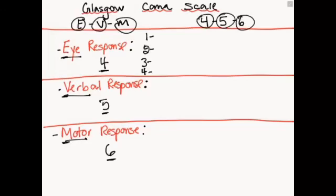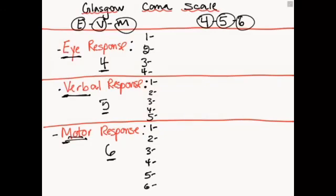In the verbal response you can score one, two, three, four, five total points. And in the motor response, of course, you can score one, two, three, four, five, six total points. So just by knowing EVM456, we've already cut down our memorization.